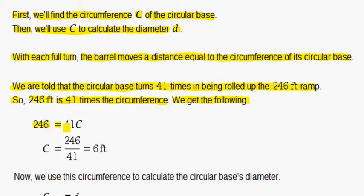246 equals 41 times C, the circumference. So, we can divide out 41. We get C alone and take 246 divided by 41, which is 6. So, the circumference is 6 feet.